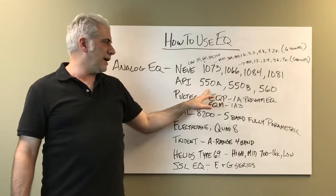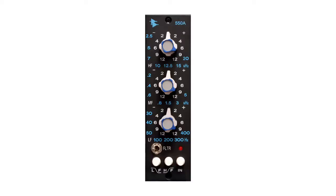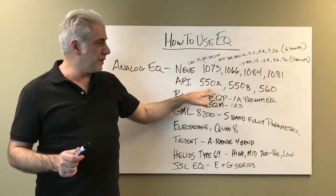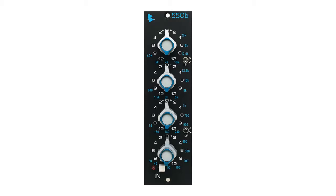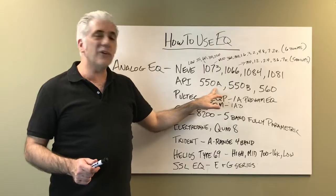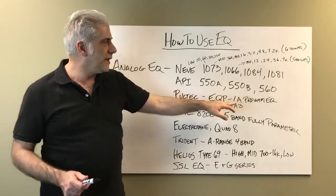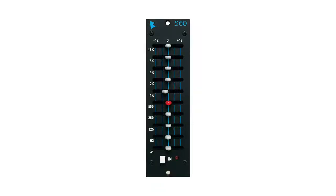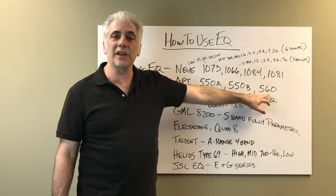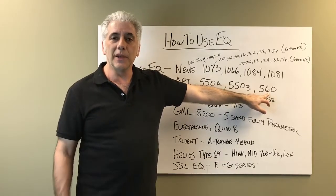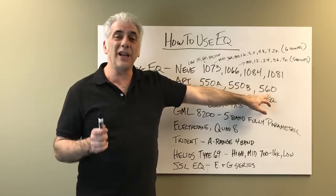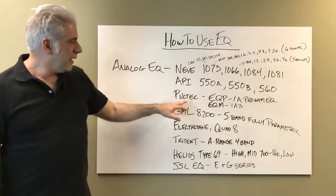The API EQs include the 550A, which is a three-band EQ with high and low shelves — I love this EQ, it's really great sounding. The 550B is a four-band EQ; I don't like it as much as the 550A, but it's useful for certain things. Then you have the 560, which is a 10-band graphic EQ — I use that a lot on kick drum or bass guitar. Very easy to use.